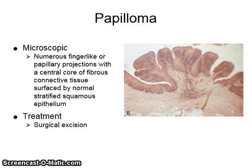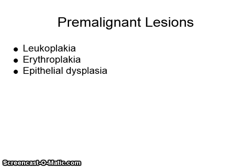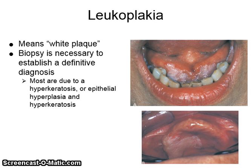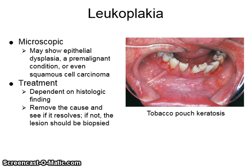Premalignant lesions are leukoplakia, erythroplakia, and epithelial dysplasia. Leukoplakia means white plaque. Biopsy is necessary to establish a definitive diagnosis. Most are due to hyperkeratosis or epithelial hyperplasia and hyperkeratosis. Microscopically, it may show epithelial dysplasia, a premalignant condition, or even squamous cell carcinoma. The treatment depends on the histologic findings. Normally the cause is removed to see if it resolves, and if not, the lesion should be biopsied. This is an image of tobacco pouch keratosis.